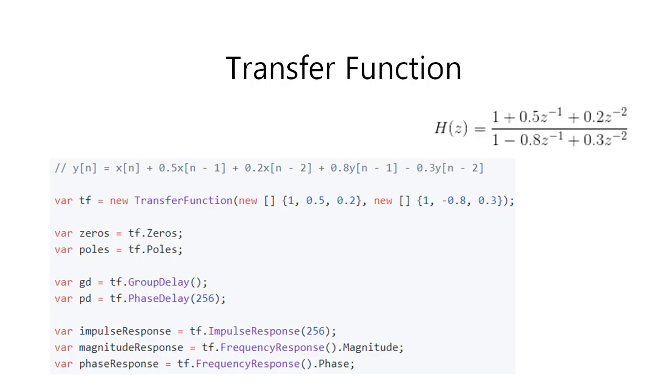Any transfer function object can be constructed from numerator and denominator coefficients or from complex zeros and poles. Then you can obtain other useful characteristics such as complex frequency response, impulse response, group delay, and phase delay.